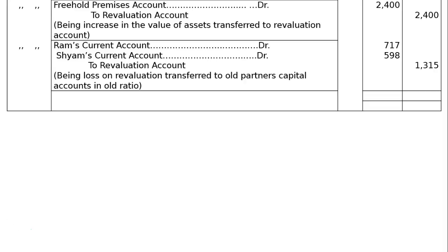Final entry — distribution of revaluation loss: since capitals are fixed, the loss is transferred to current accounts. Ram's current account debited Rs. 717, Siam's current account debited Rs. 598, to revaluation account Rs. 1,315. Being loss on revaluation transferred to old partners' current accounts in old ratio. The total of the journal is Rs. 40,630 in both the debit and credit columns.